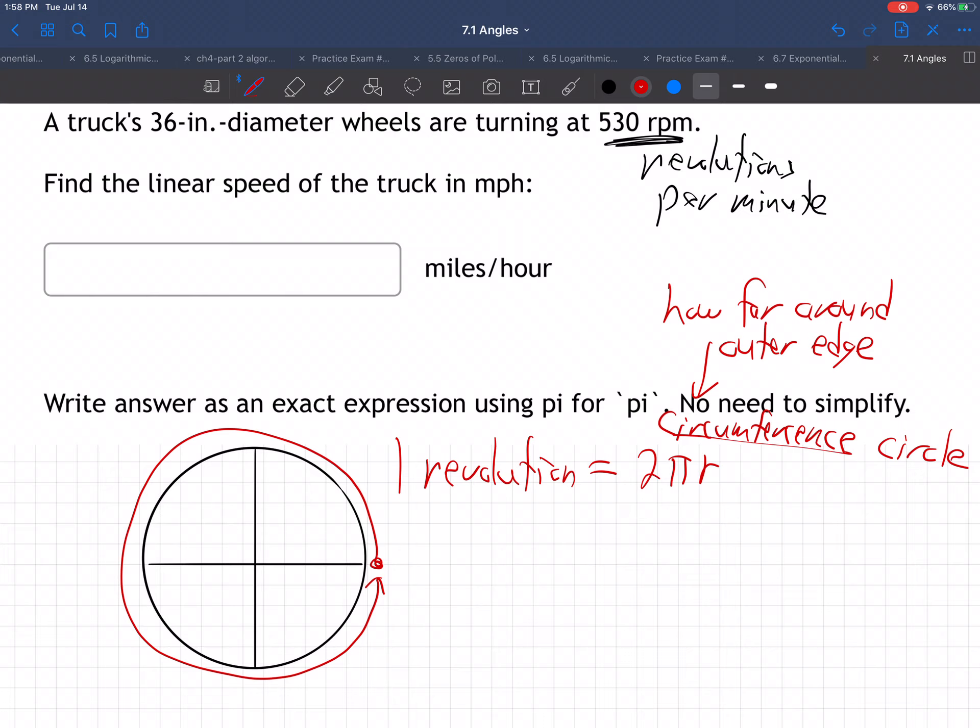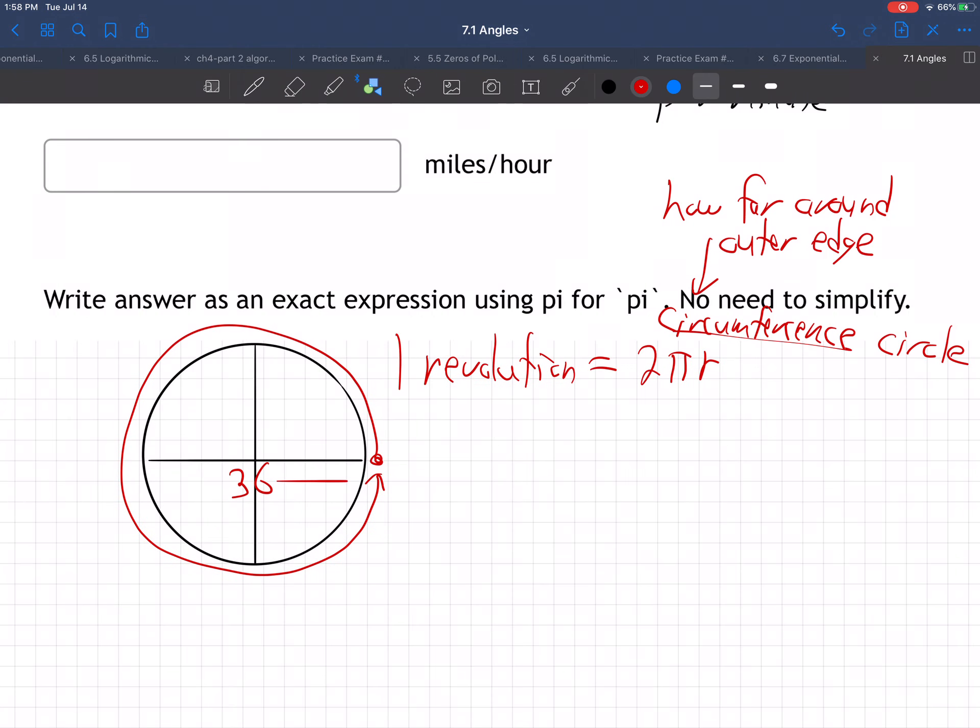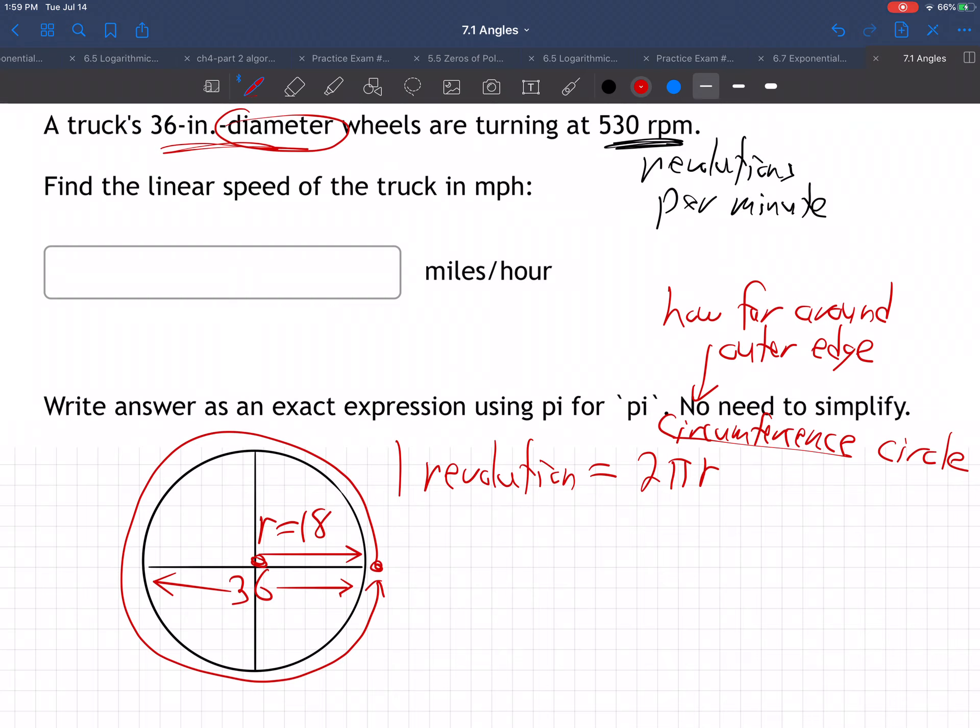So what's the radius? Well, it's a 36-inch, careful, diameter. So that means it's 36 all the way across. So that means from the middle to the edge, the radius must only be half of that, 18, right? 36 is the diameter. Diameter is all the way across. This is radius. Diameter is all the way across.